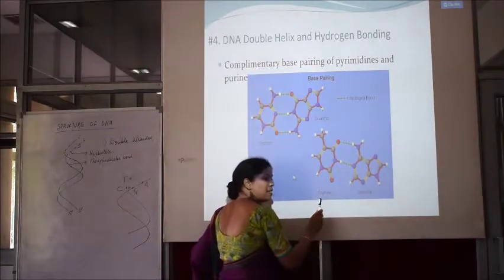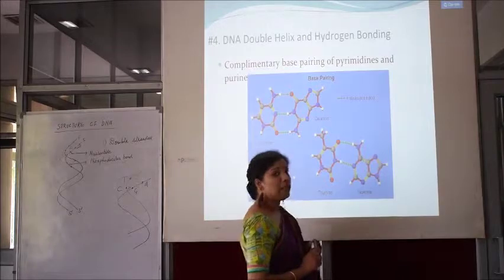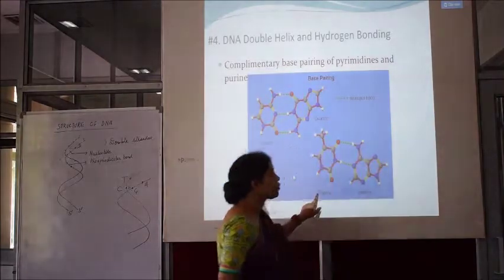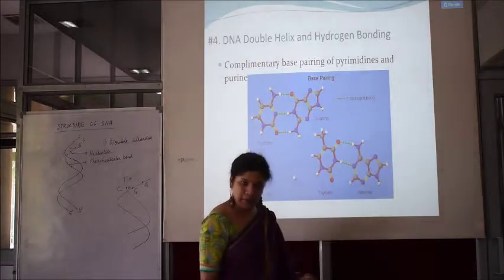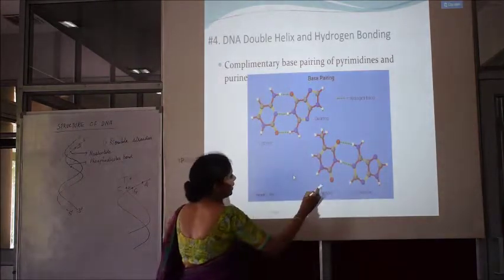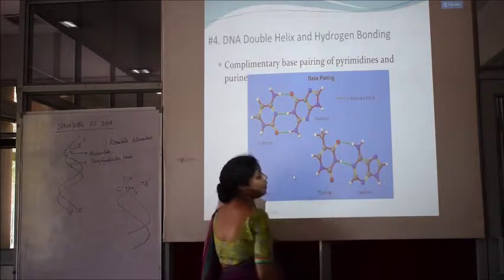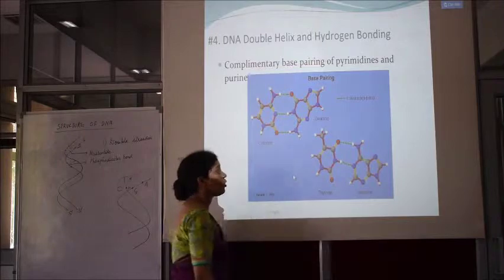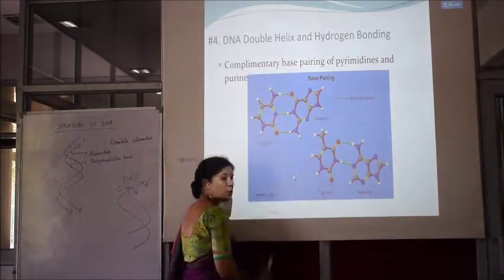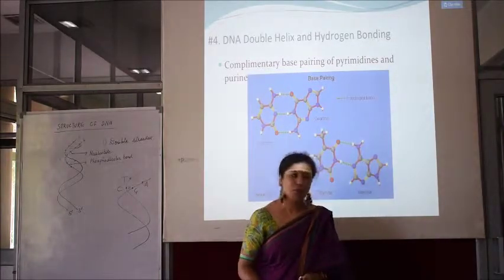Same is the story with thymine and adenine — thymine always base pairs with adenine in DNA. However, if it is RNA, thymine is not present and it is uracil instead. You can see that adenine and thymine are hydrogen bonded, but the number of hydrogen bonds here is only two, unlike the three hydrogen bonds between guanine and cytosine.